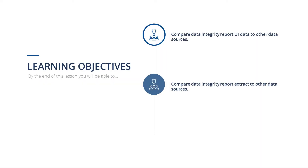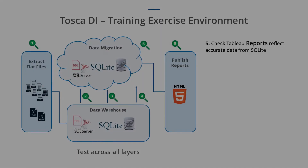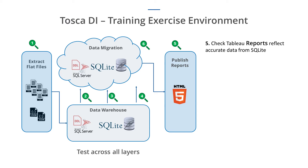In this lesson you will learn how to save business intelligence report data to be compared against other data sources. Data integrity can be compromised as it's moved and transformed through the warehouse. It is important to test this filtered and aggregated data in the BI reports against the original data as it moves through the warehouse.